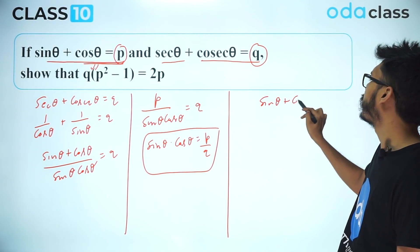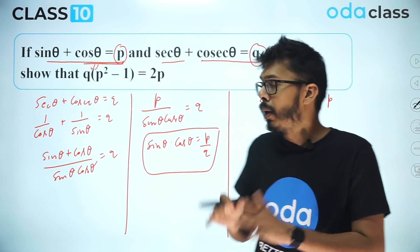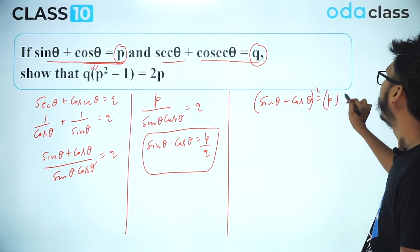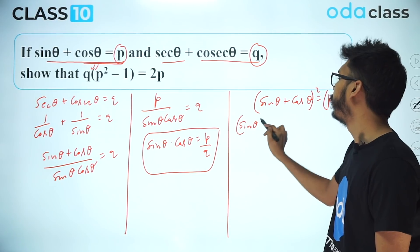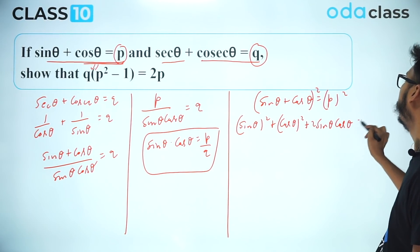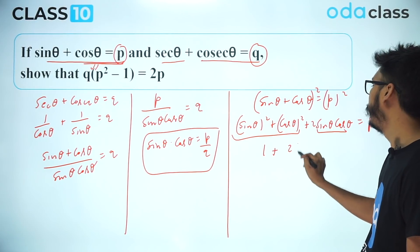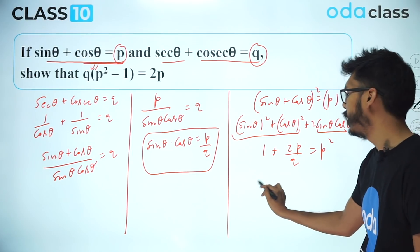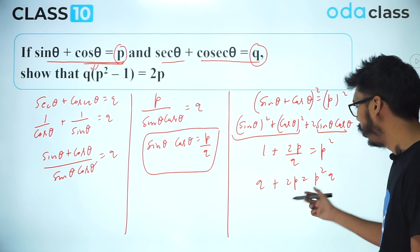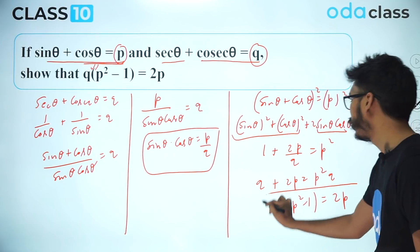Now working on sinθ + cosθ = p. To use the sin²θ + cos²θ = 1 identity, I square both sides: (sinθ + cosθ)² = p², which expands to sin²θ + cos²θ + 2sinθ·cosθ = p². This gives 1 + 2(p/q) = p². Taking LCM: q + 2p = p²q, which rearranges to q(p² − 1) = 2p. This is the required relation between p and q.